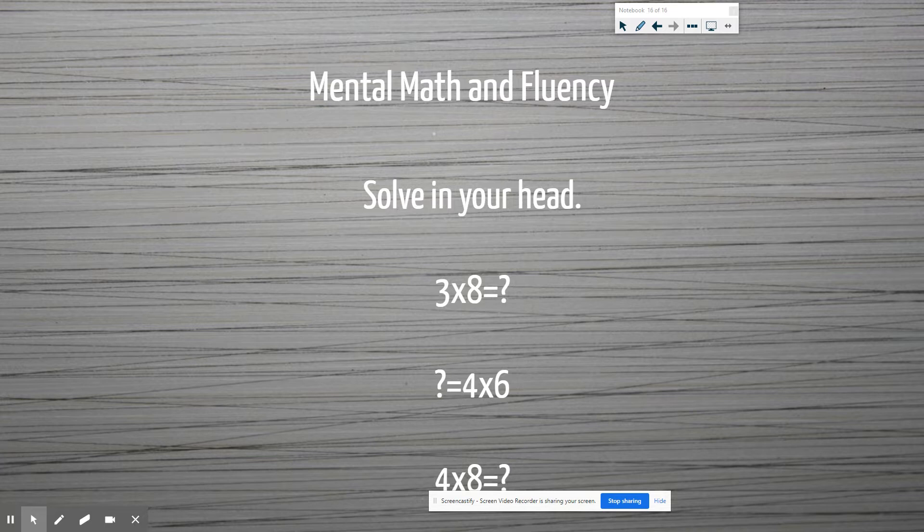Four times eight: change the four to five and then subtract eight to get 32.